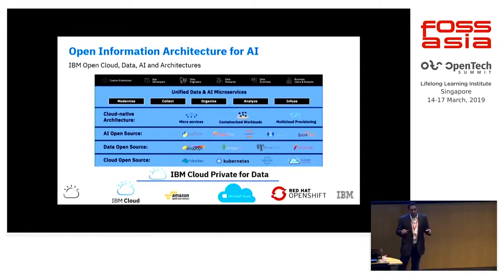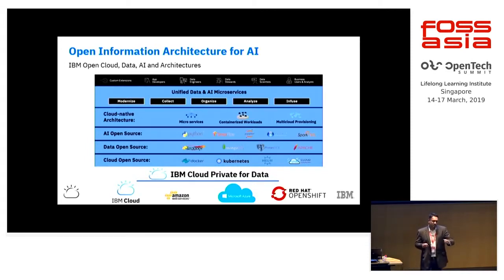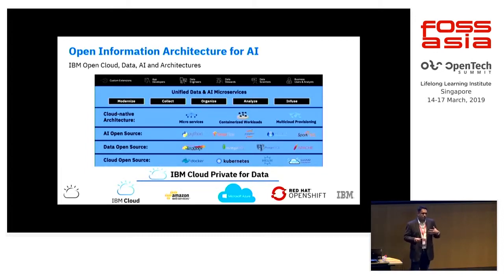The IBM differentiation is to provide, on top of that, a services, consulting, and support set of capabilities that large companies and clients really need. It's hard for a large enterprise to just pick up a few open source libraries and manage the entire lifecycle of taking AI into their products, plus the support that has to follow. IBM helps with best practices, support, services, and consulting.